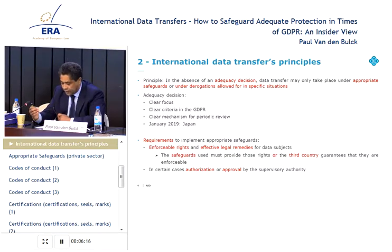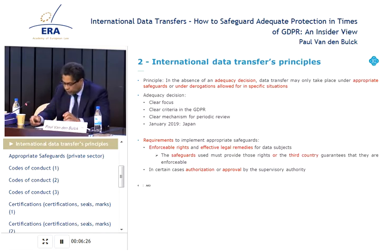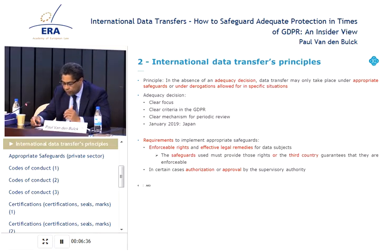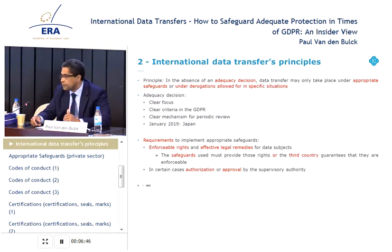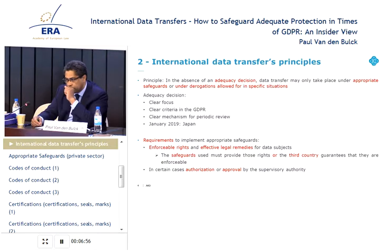In the communication of 2017, the Commission highlighted the following criteria: the extent of commercial relationship the EU has with the country, the extent of data flows, the pioneering role of the third country that could serve as a model for its region, and the overall political relationship — common values and shared objectives. So right now there is really a policy to include some countries in the list for review.